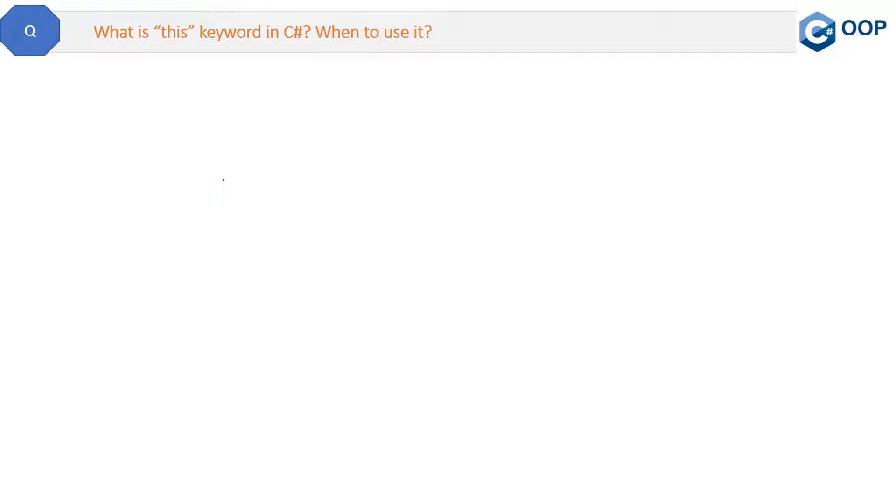This is a good question from an interview perspective: what is the 'this' keyword in C# and when to use it? Let's start with the definition. This keyword is used to refer to the current instance of the class.